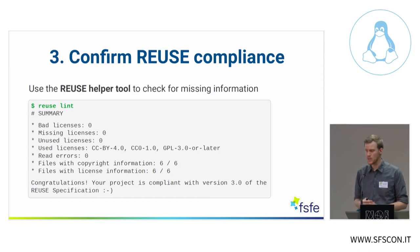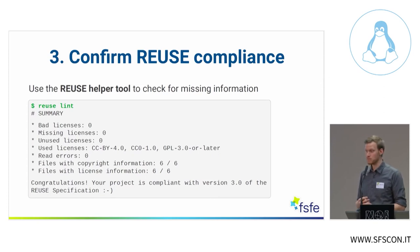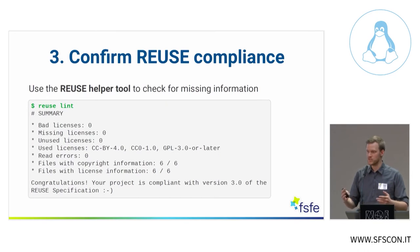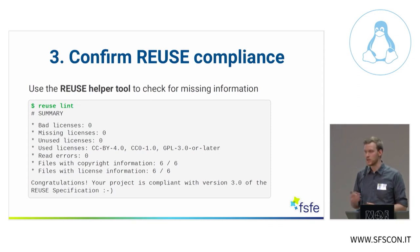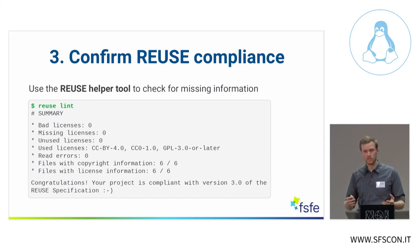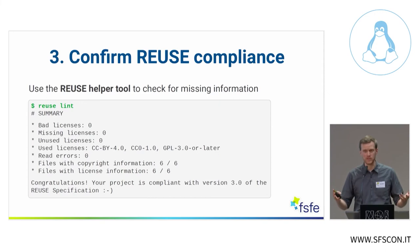In this example, we run reuse lint on a small project with only six files. It reports that we have three licenses: CC-BY-4.0, CC0, and GPL. For all files, copyright and licensing information is found. In the end, this means your project is REUSE compliant.